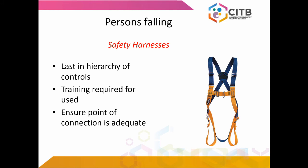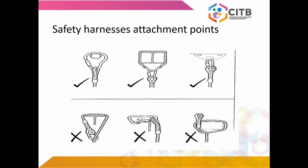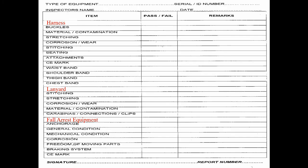Safety harnesses are worn for the protection of people who work at height. They are last in the hierarchy of control. Training is required for use, and we must ensure that the point of connection is adequate. This slide shows safety harness attachment points — the top row shows correct attachment and the bottom row shows incorrect. Before harnesses are worn, a complete inspection must be carried out and a written record kept.